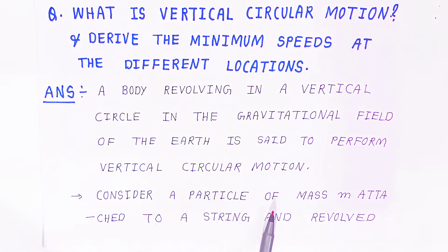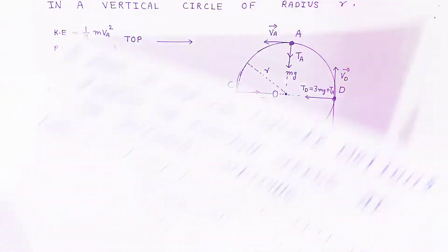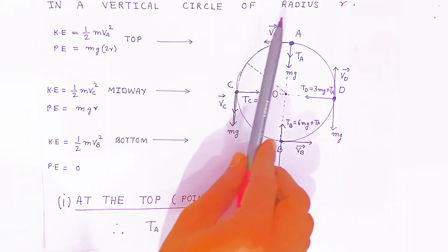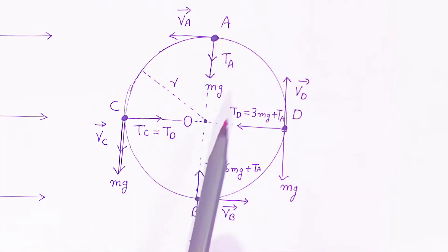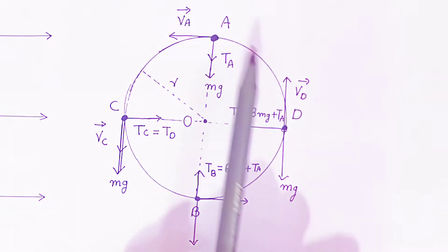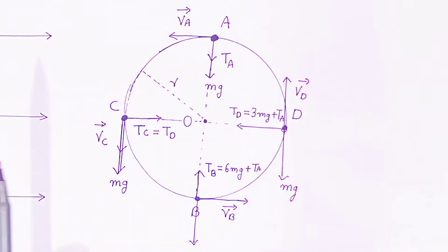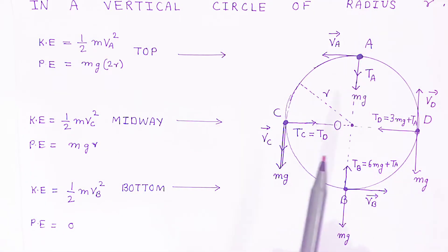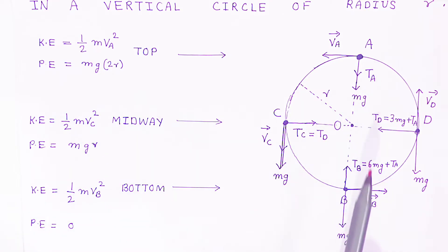Consider a particle of mass M attached to a string and revolved in a vertical circle of radius R. This is the mass of the particle and this is the string — it is revolving under the effect of gravity. Before going to the velocity, first we see kinetic energy and potential energy.